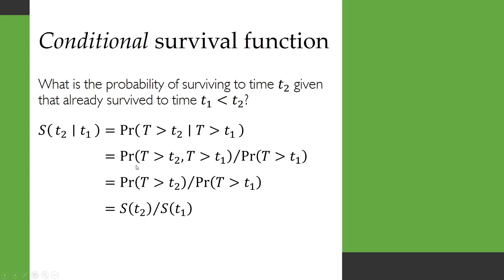When you go through the maths, you'll find that the conditional survival, which we express as shown here, S(t2|t1) - so surviving to t2 conditional on surviving to t1 - is just equal to the survival at t2 divided by the survival at t1.